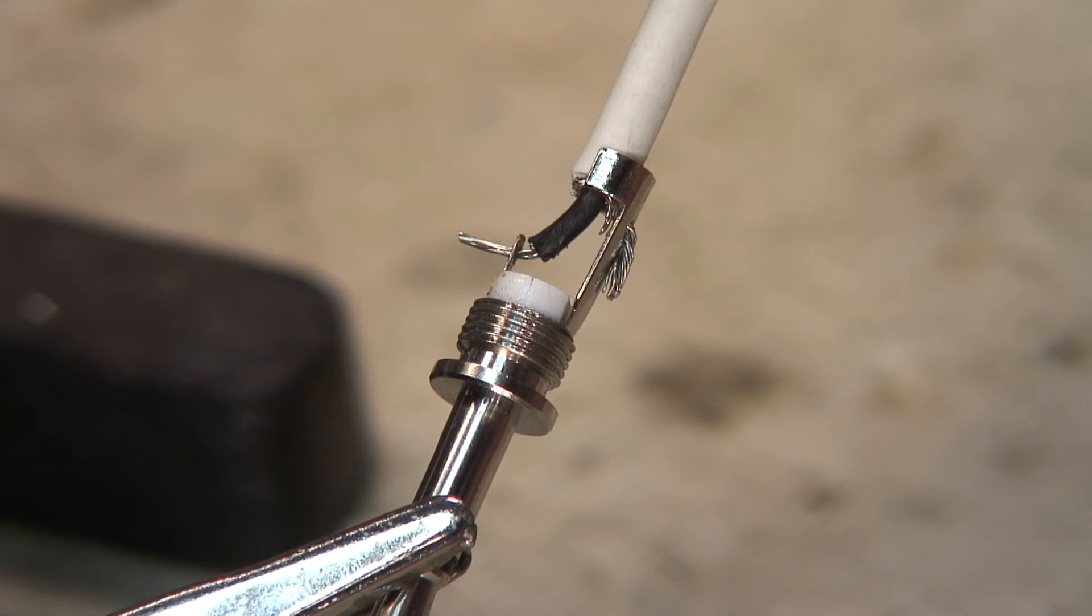It can be a bit tricky to solder the cable together, so it really helps to have a lot of patience. This is the V-trig end, so it's not that complicated. The braid is soldered to the sleeve and the center conductor is soldered to the tip.